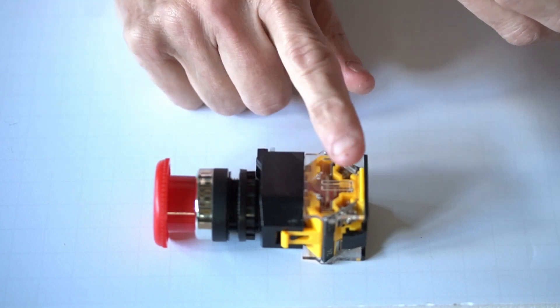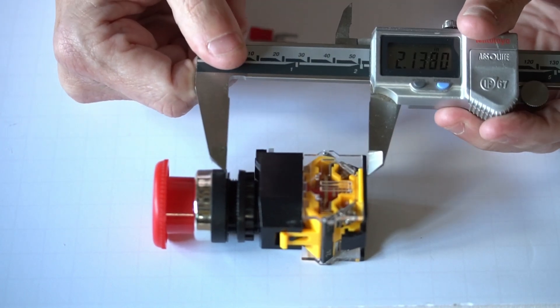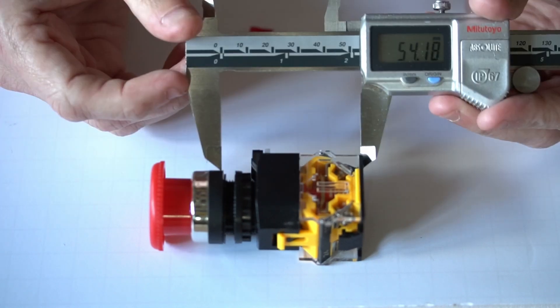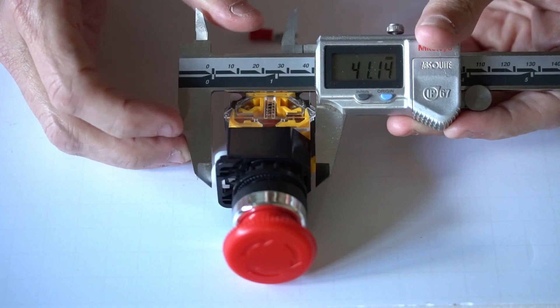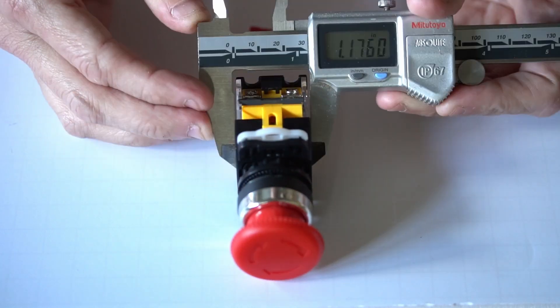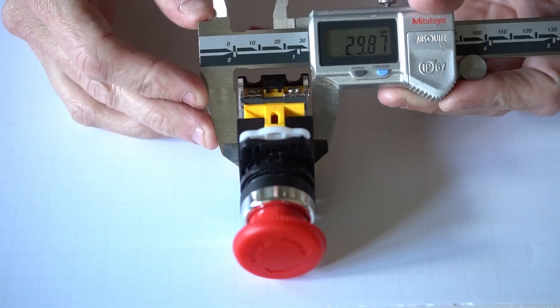The dimension of the part of this e-stop that will protrude inside of the case is approximately 2.13 inches or 54 millimeters. The width of the section that's inside of the case is 41 millimeters or 1.62 inches and in the other dimension it's 1.18 inches or 30 millimeters.